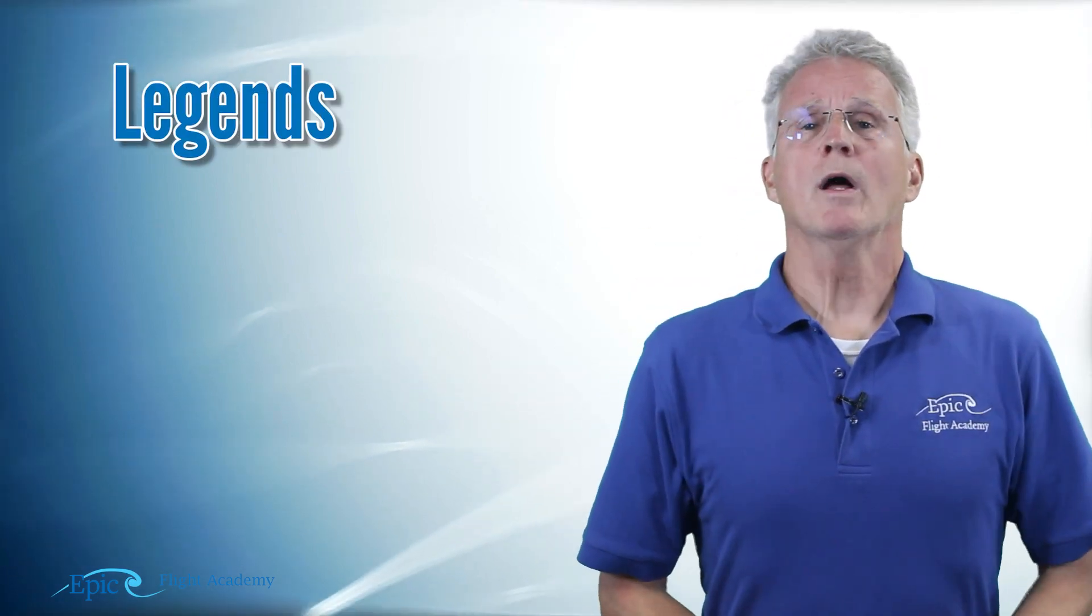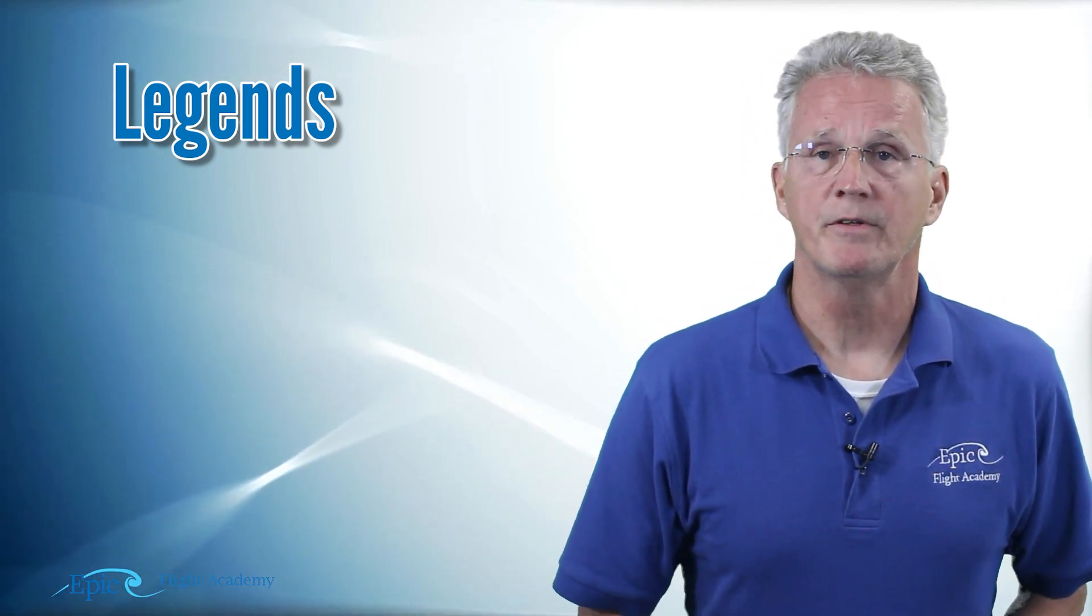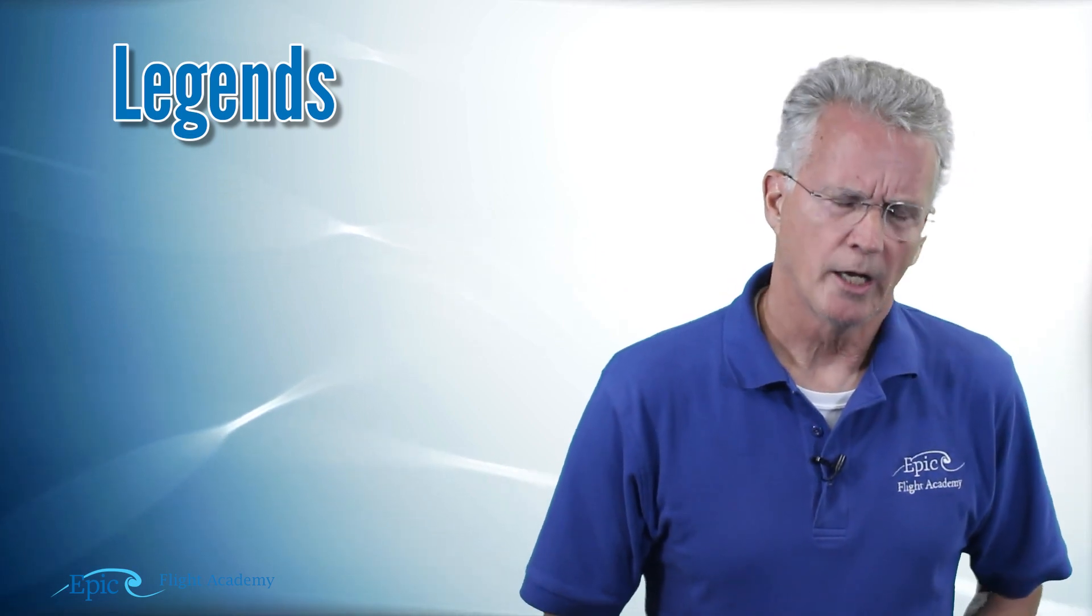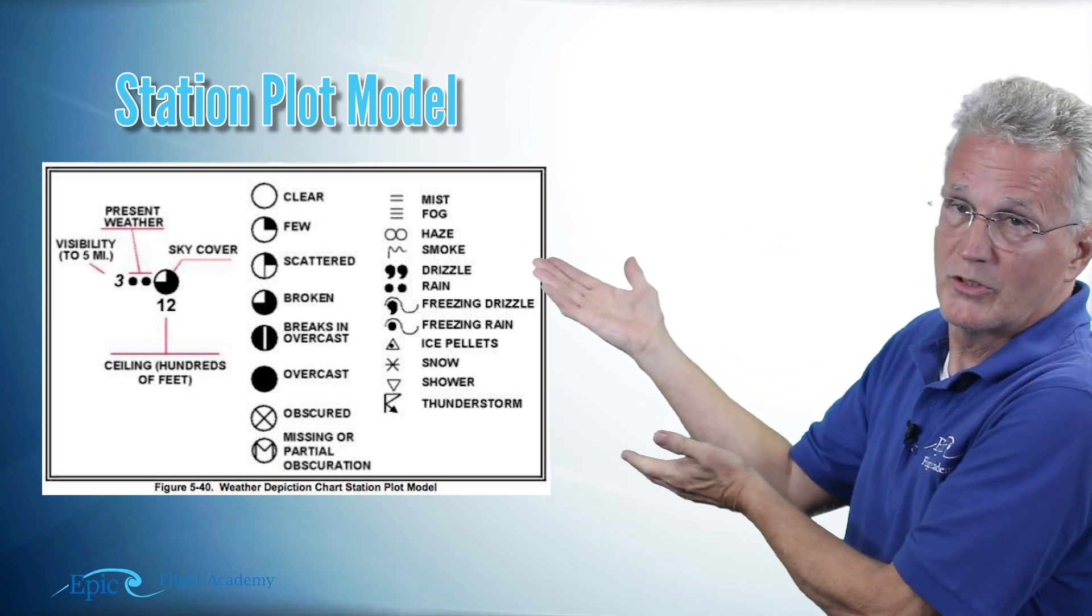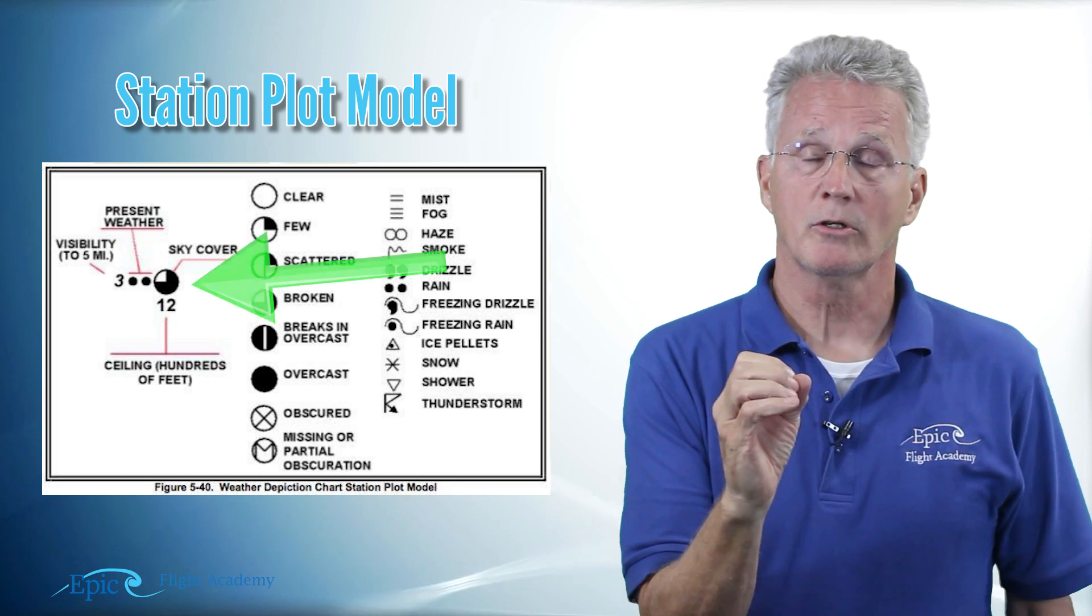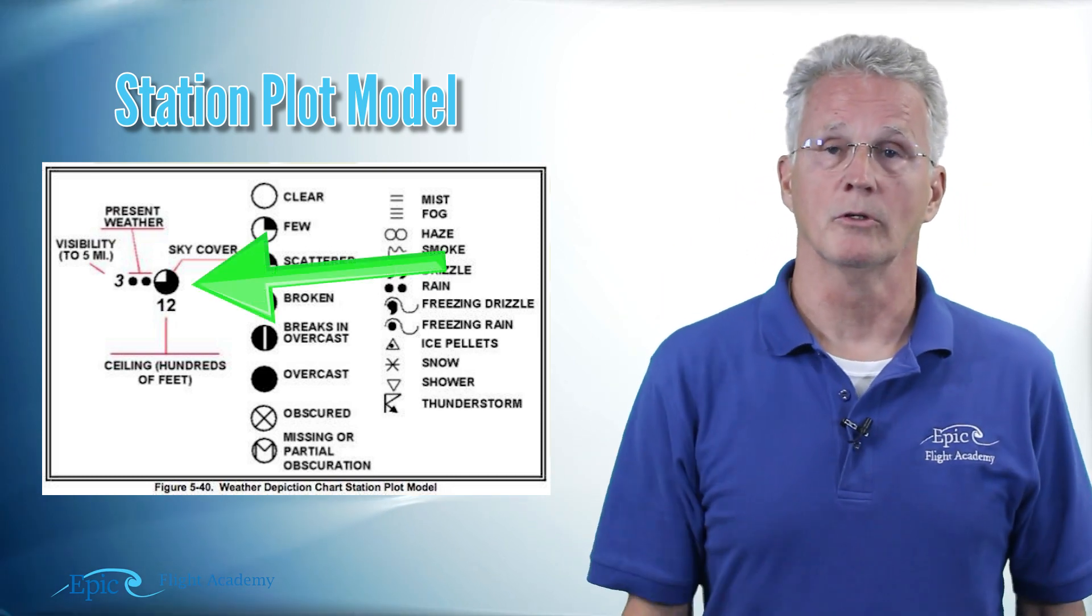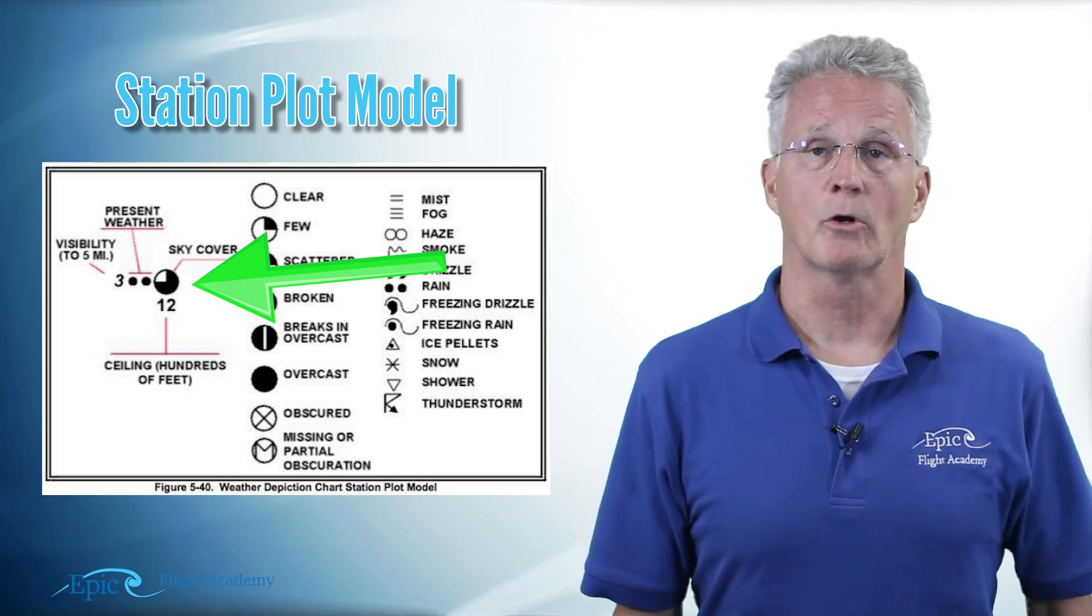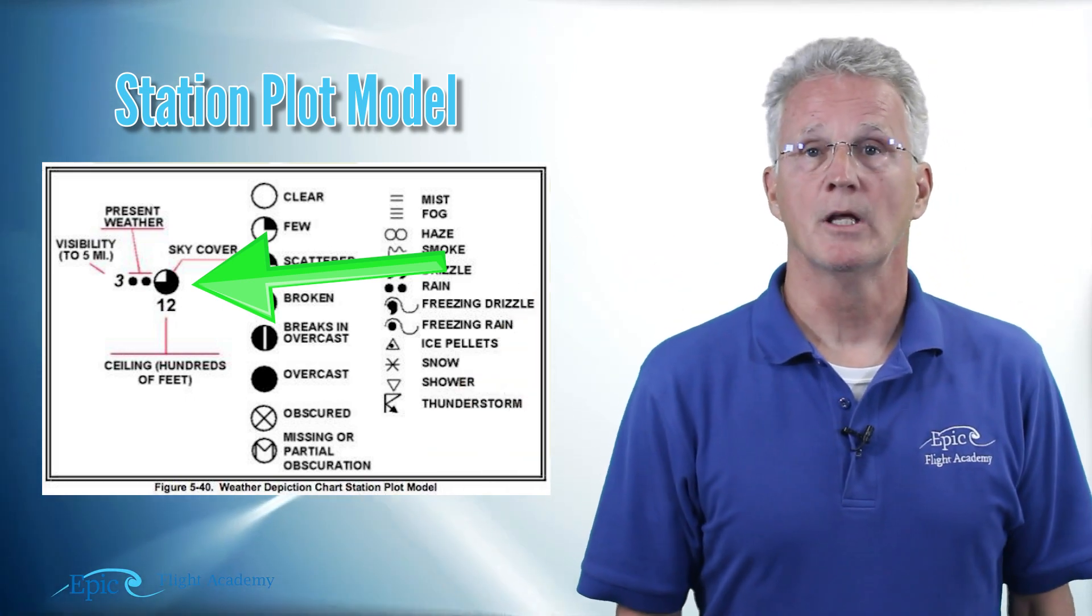One of the most common legends in observed aviation weather products is called the station plot model and you can see an example of that here. The station plot model is a circle for that station and around that circle is information about the current weather and inside of that circle is information about the current sky cover.